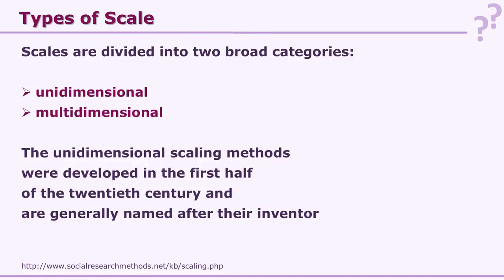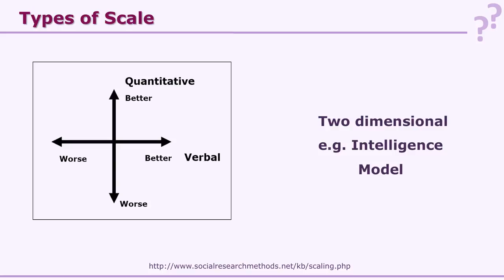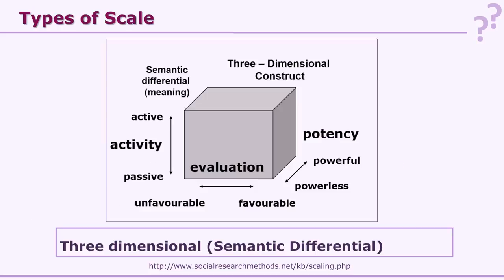There are two types of scales: unidimensional and multidimensional. Unidimensional means there is only one dimension — for example, height (tall or short) or self-esteem (less or more). In multidimensional scales, there can be two, three, or more dimensions. One example is a model of intelligence with verbal intelligence, which can also be quantified. Another example of three dimensions is a scale measuring activity, evaluation, and potency — this is called a semantic differential scale.